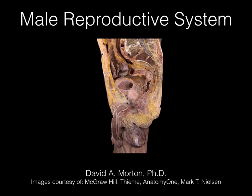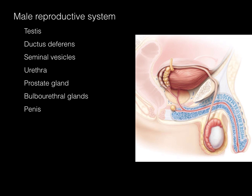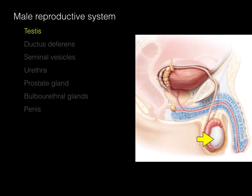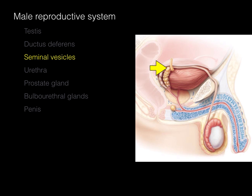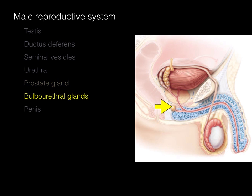Male Reproductive System. The male reproductive system consists of the following primary anatomical structures: the testis, the ductus deferens, the seminal vesicles, the urethra, the prostate gland, the bulbourethral glands, and the penis.